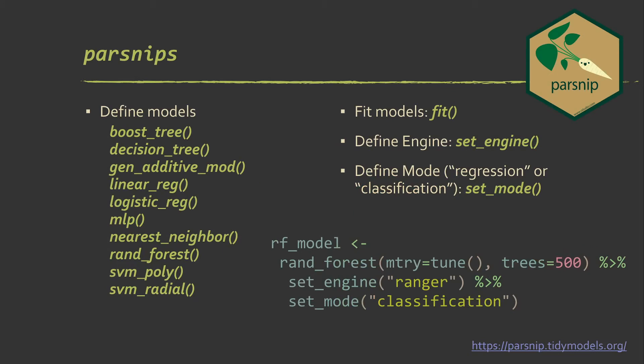Okay, so again, parsnips is the go-to for defining models. They've created these functions for kind of broad categories of models. Currently, there's less options in parsnips than there is in Caret. That's why you may decide to use Caret for certain tasks. These are some of the common ones.